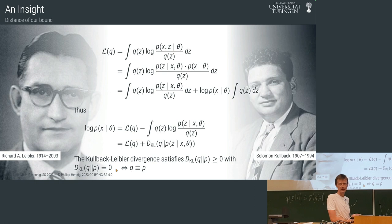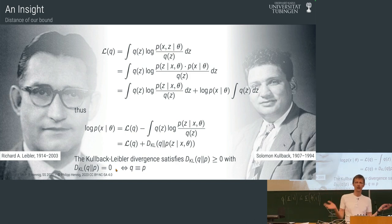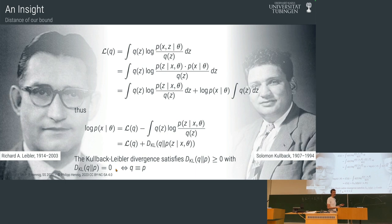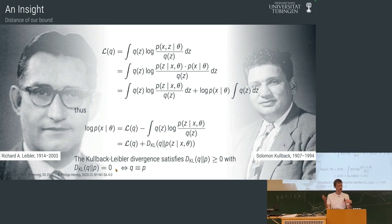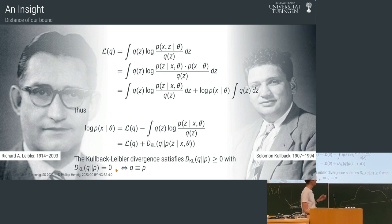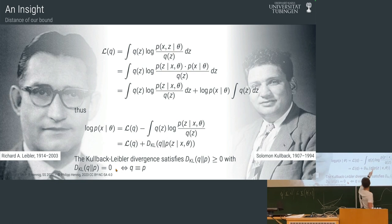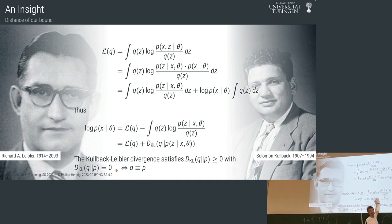The KL divergence is non-negative — always zero or larger than zero. It is a divergence, not a metric — it doesn't obey the triangle inequality, but for certain types of distributions like exponential families it obeys some form of Pythagorean theorem. The most important thing is that it is zero — its lowest possible value — if and only if q and p are equal to each other.